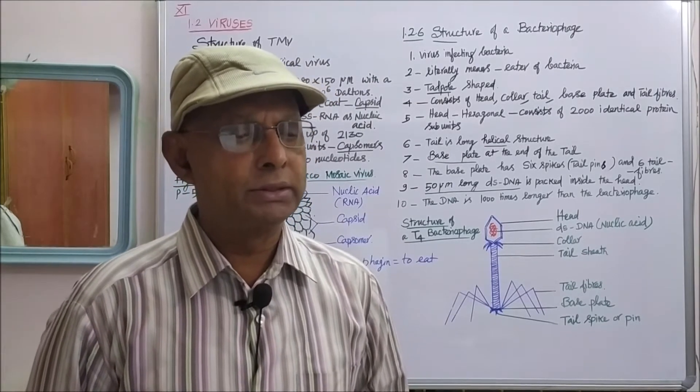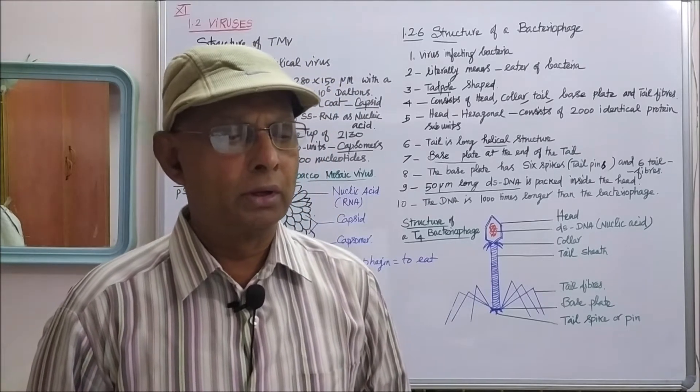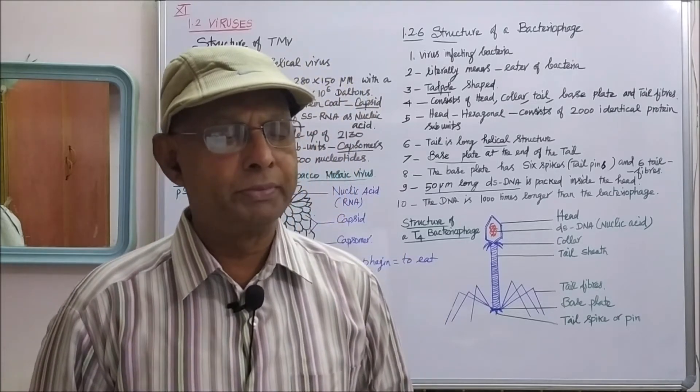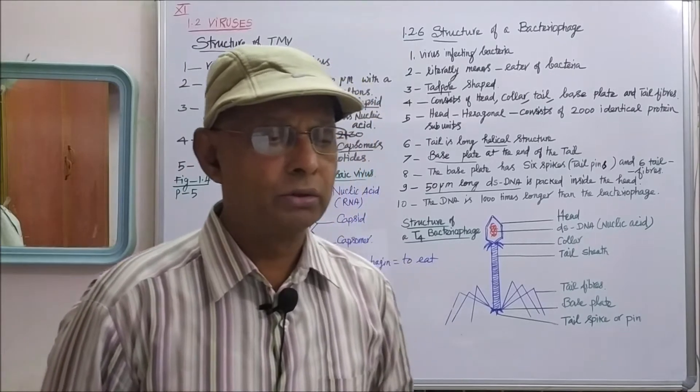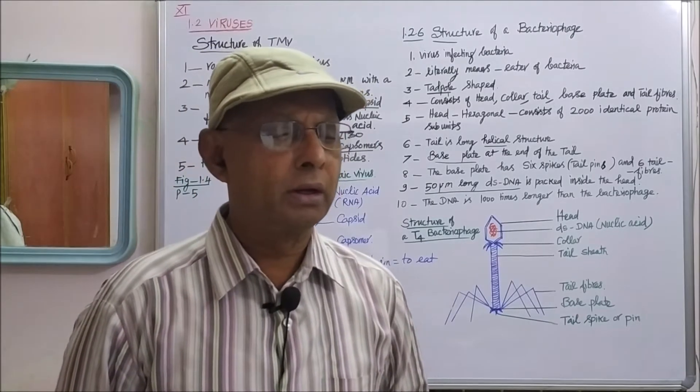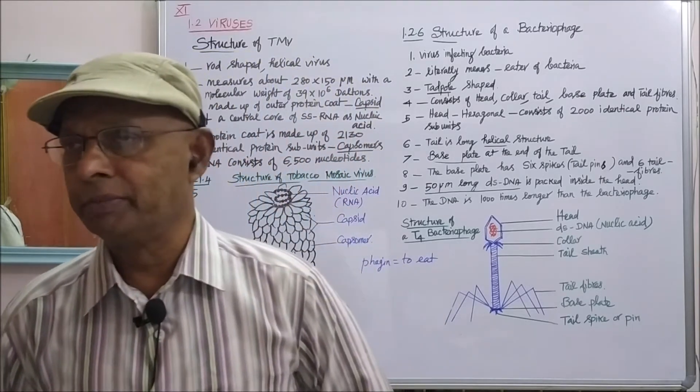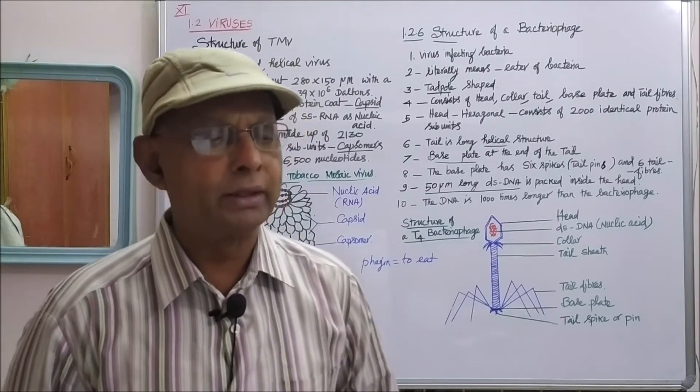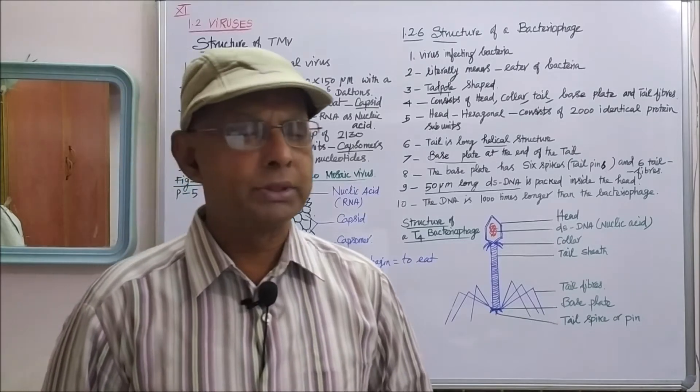The tobacco mosaic disease spreads through vectors like aphids and locusts. Locusts are grasshoppers with strong powers of flight that attack the tobacco mosaic plant and automatically transmit the virus, spreading the disease. What are the symptoms of tobacco mosaic disease?